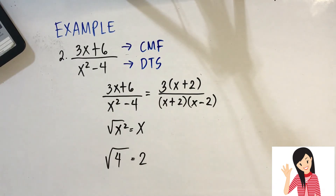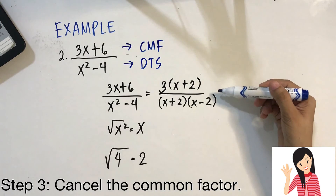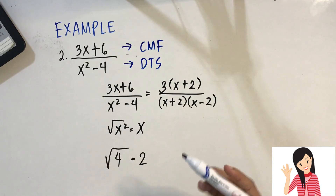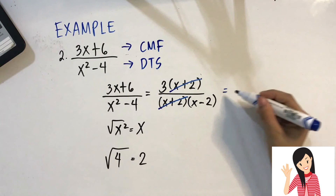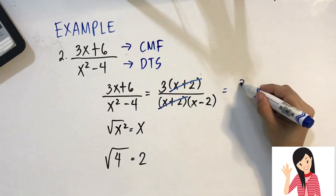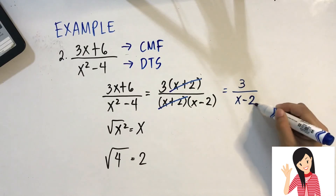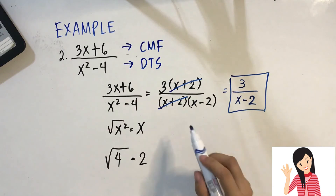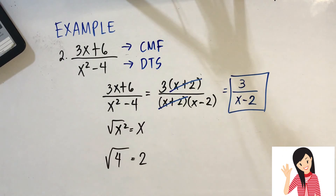Now for the third step, cancel the common factors. Comparing numerator and denominator, they share (x + 2). Cancel it out. The final answer is 3 over (x − 2). You do not have to copy the parentheses since we have no other factor in the denominator, so it is simply x − 2.